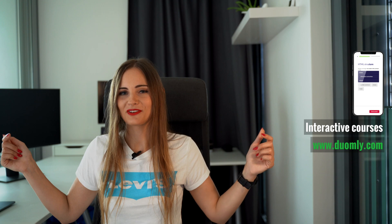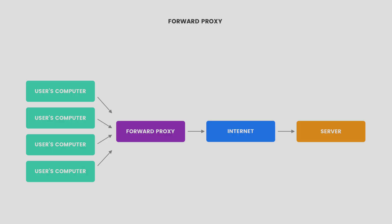Let's talk about reverse proxy and how it works. But to start from the beginning, let me explain what the normal proxy, also called the forward proxy, is. I have a visualization for you, so let's take a look at the image. In this image you can see how the communication with the forward proxy looks like. The request is sent from the client and then the request goes through the proxy server, which communicates with the server to get the data and send them back.